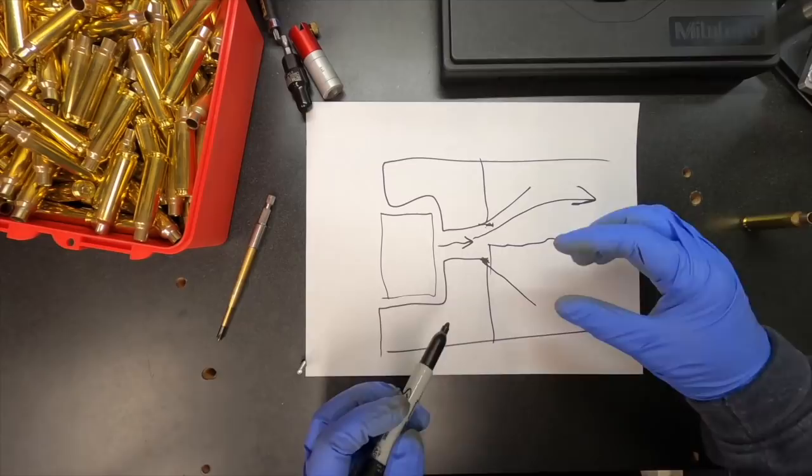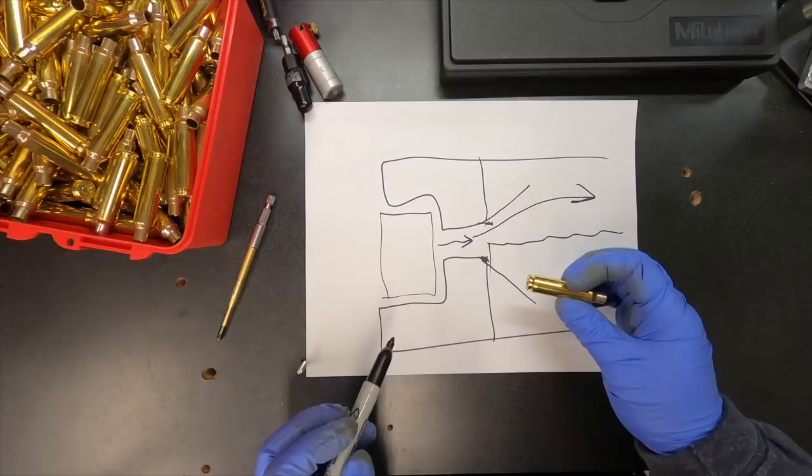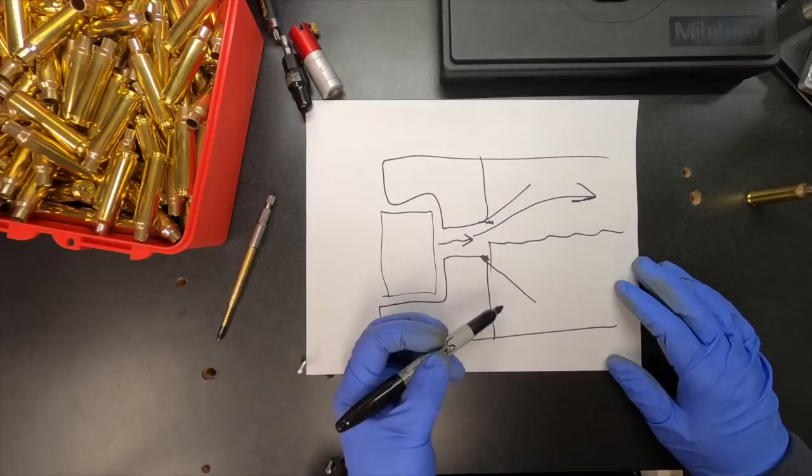When the brass is here versus maybe I turn and put it in the chamber this way or this way or this way, how does it really know? And where is my optimal exit for that flash? As a result, I just want to true them up.